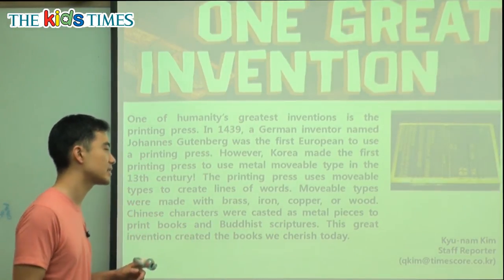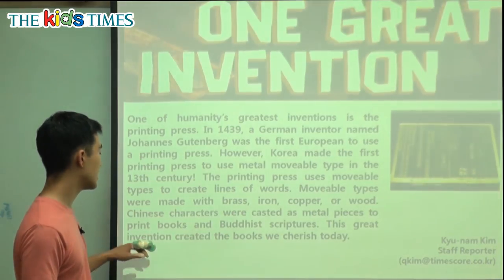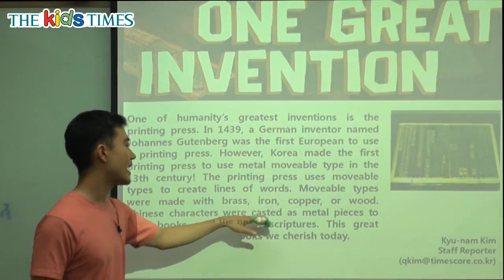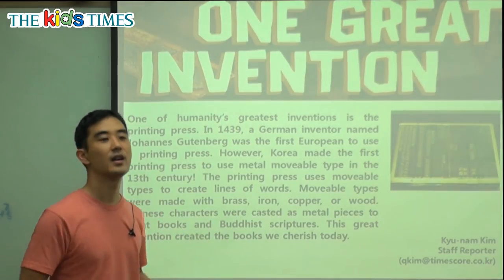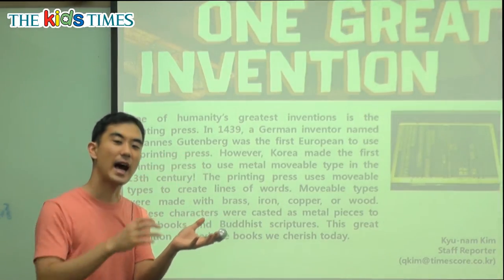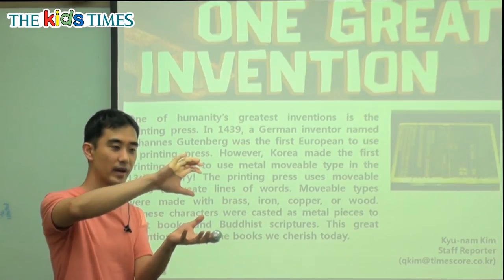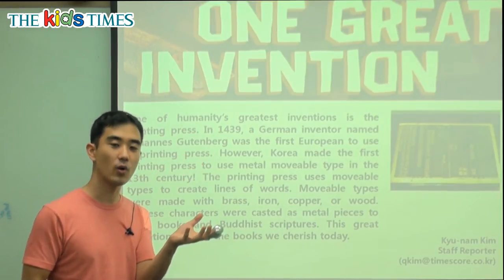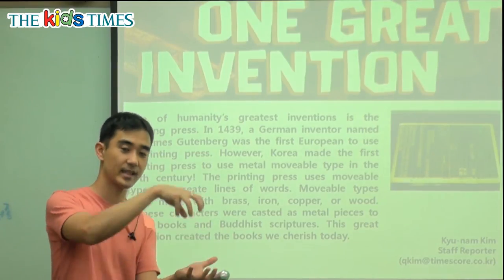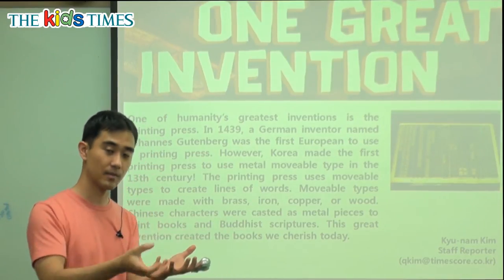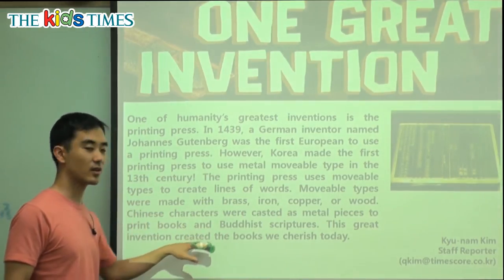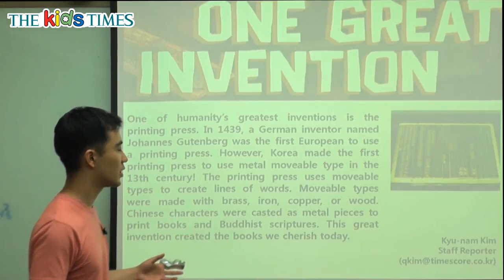Chinese characters were casted as metal pieces to print books and Buddhist scriptures. Casted means if we have a shape — say, the shape of an A — and we pour hot liquid metal in, then when it cools and hardens, we take it out and we get the letter A. So we're casting a letter A, and we can keep making new A's. This great invention created, long ago, the books we cherish today.